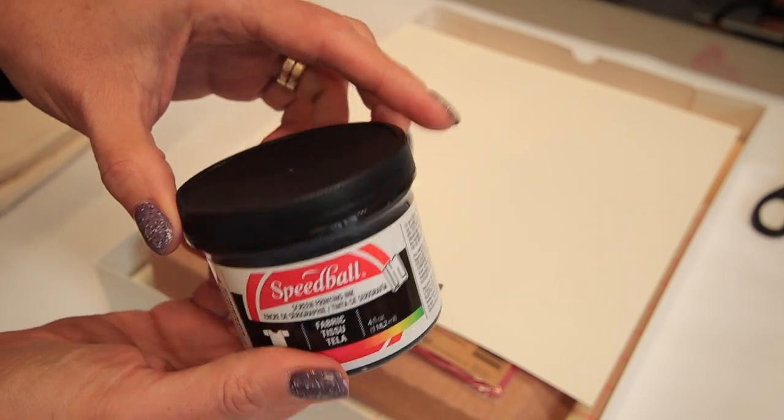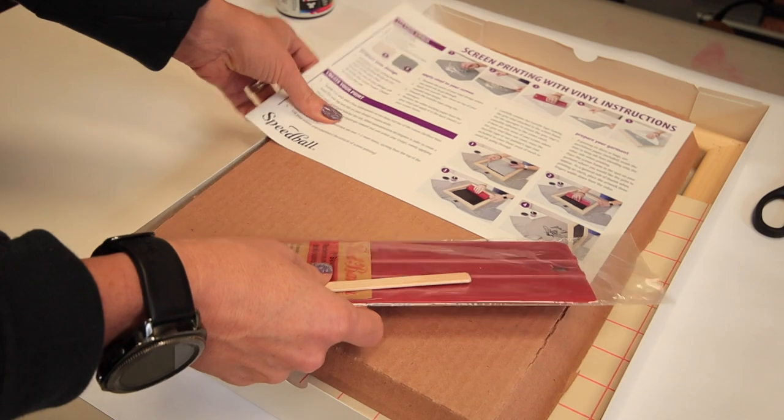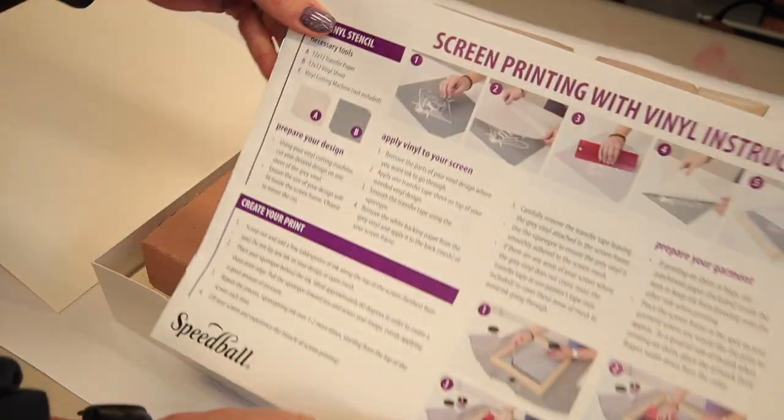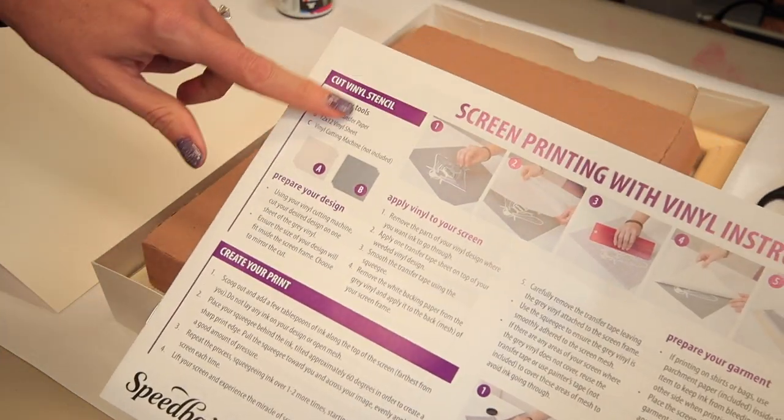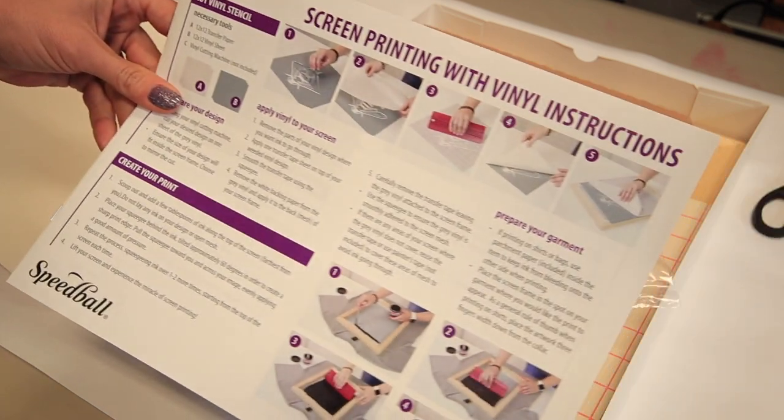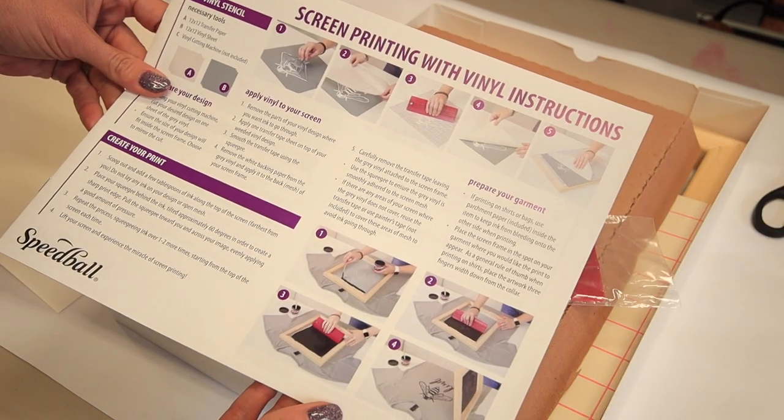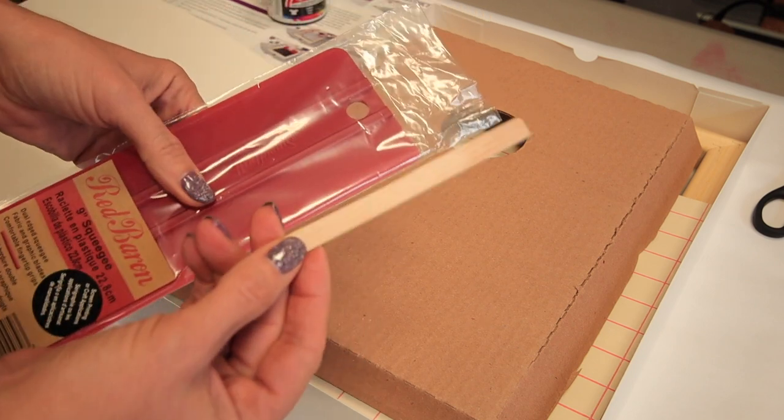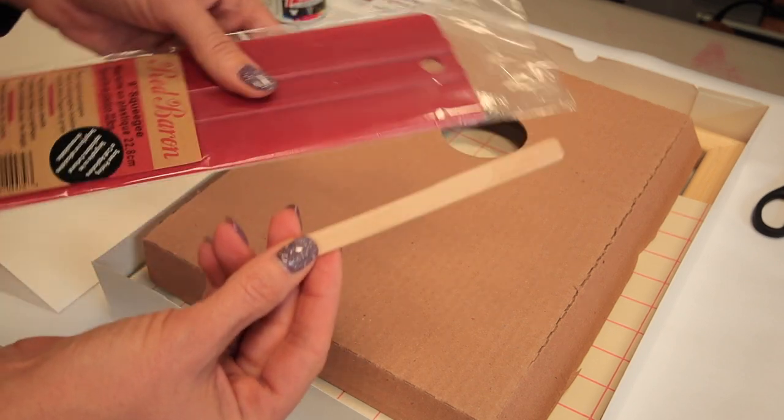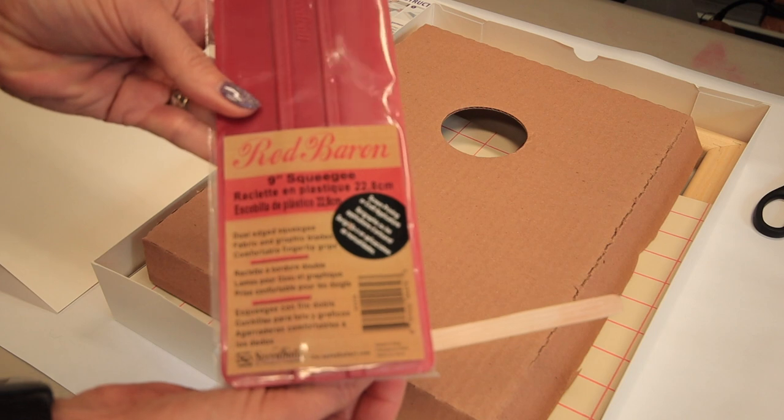We've got directions and they are pretty simple to read, which I like. It's got photos that kind of give you an idea as to what you're going to be doing. And here we've got a popsicle stick, I'm guessing, so you can just scrape off the extra ink that is on there so that way it doesn't get everywhere.